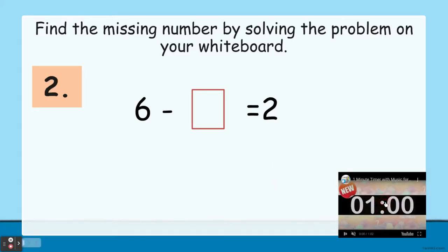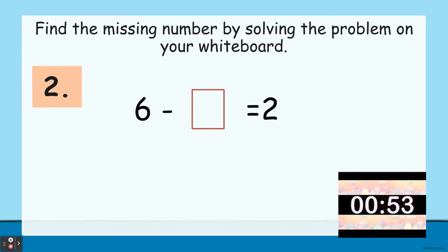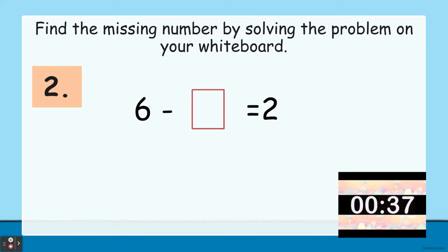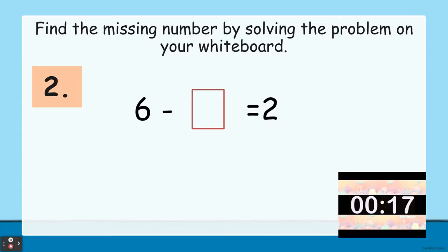Number two: 6 take away blank equals 2. What is the missing number? You can show your 6 fingers and close 2 fingers to get the correct missing number.